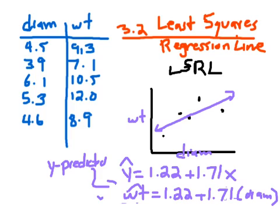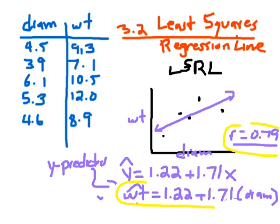The r-value for this data is r equals 0.79, which means the correlation is relatively strong — moderately strong and positive. The correlation coefficient r and the equation of the LSRL are numbers your calculator can compute. We're going to learn in class how to get those numbers.